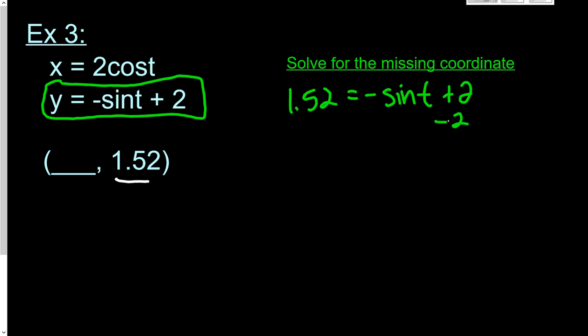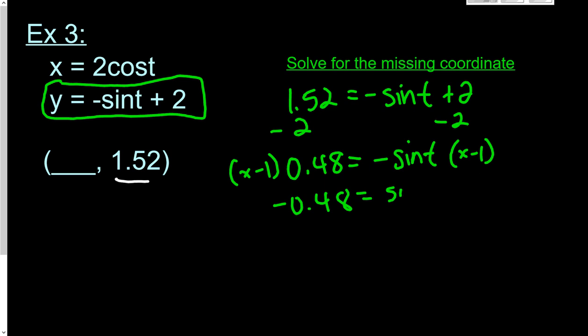And then we're going to start out by subtracting 2 from both sides. And I get 0.48 equals negative sine t. And then I'm going to multiply it by negative 1 to get rid of that negative. And I get negative 0.48 equals sine t.